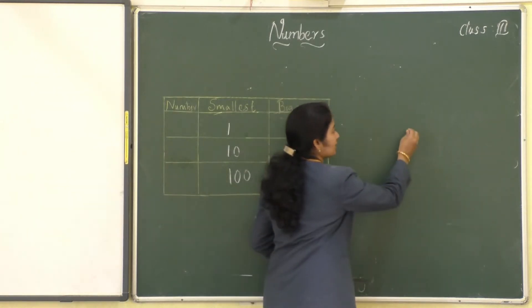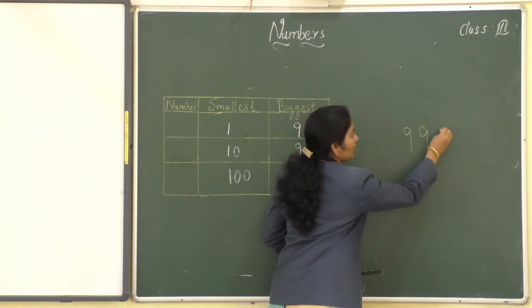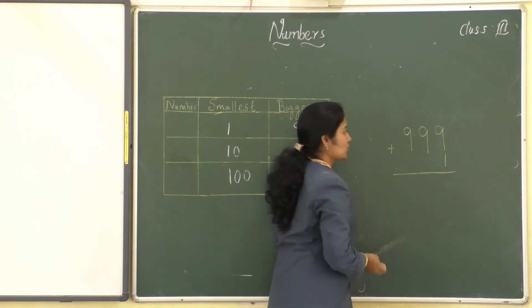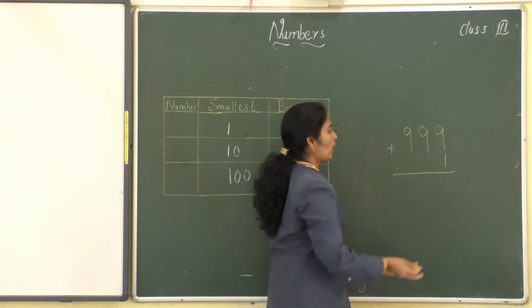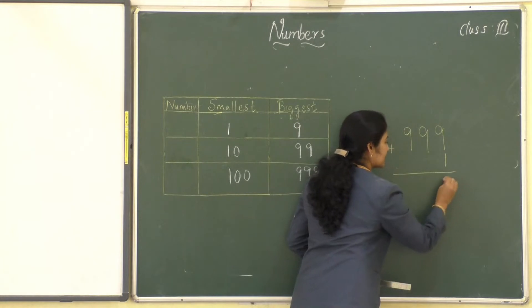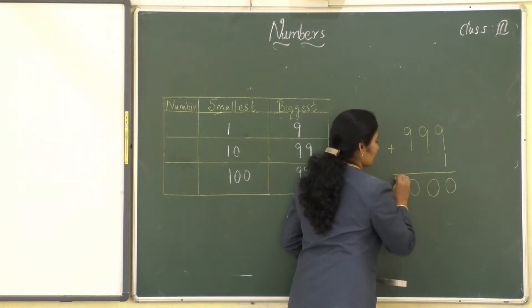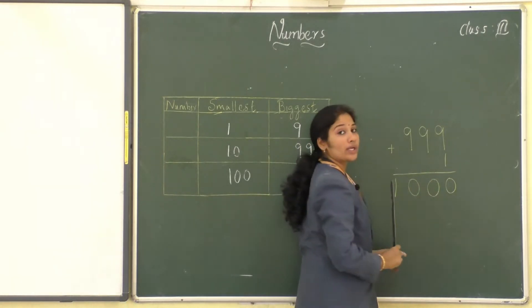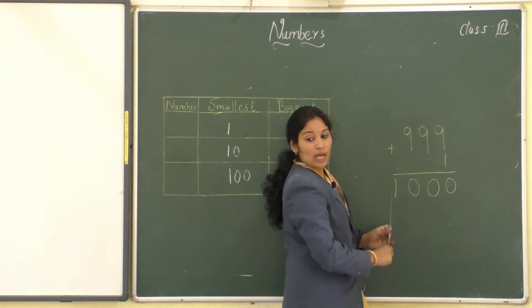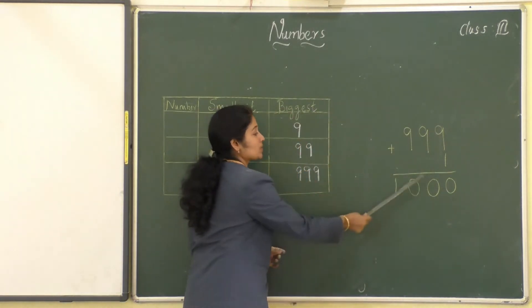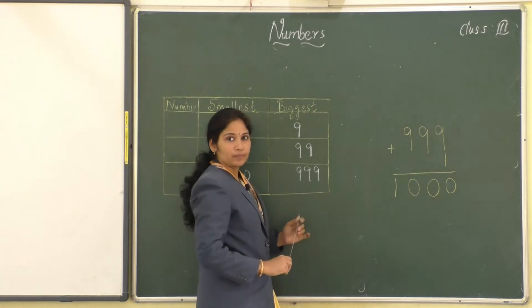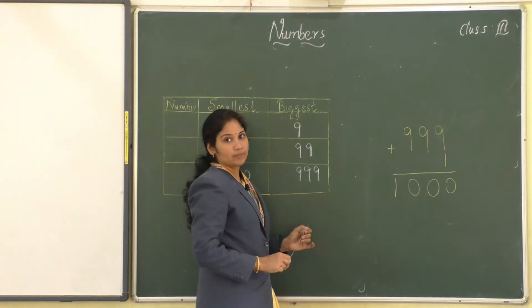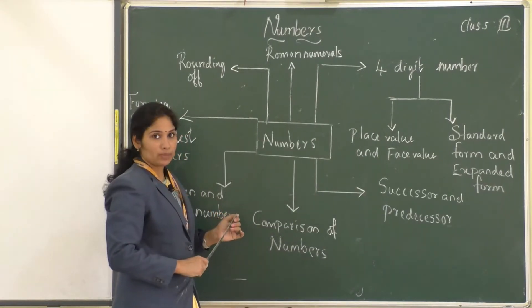If you add 1 to the biggest three-digit number, what will you get? We will get 1000, which is the smallest four-digit number. Now we created the smallest four-digit number. Our first chapter is based on four-digit numbers. Here is the mind map of Chapter 1.